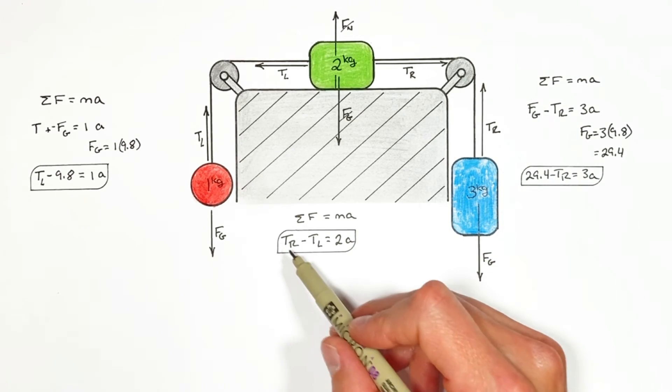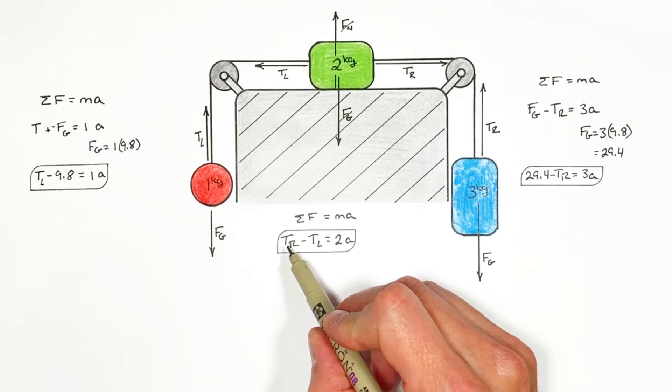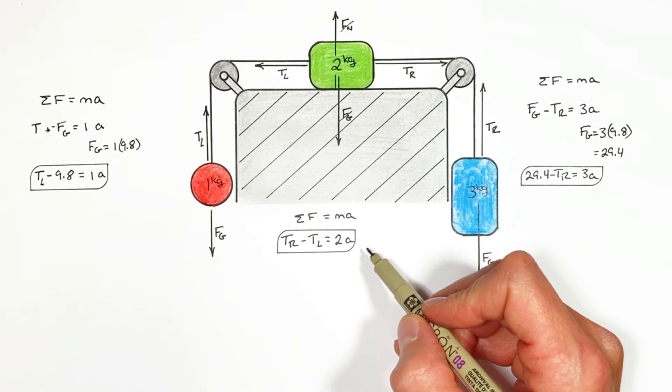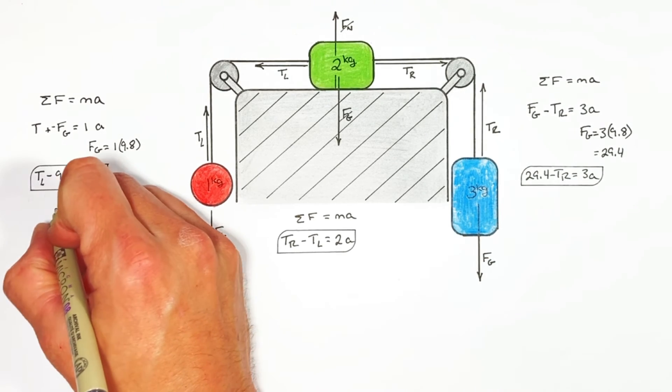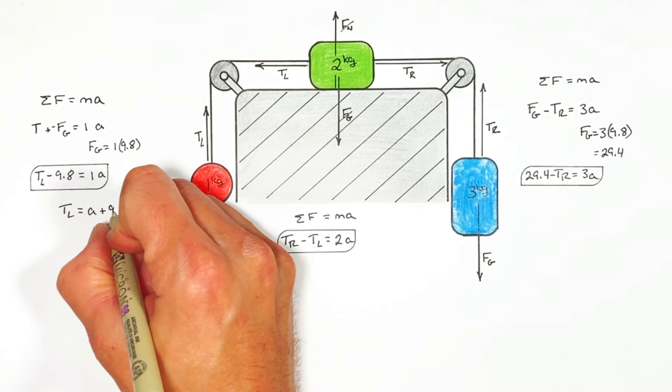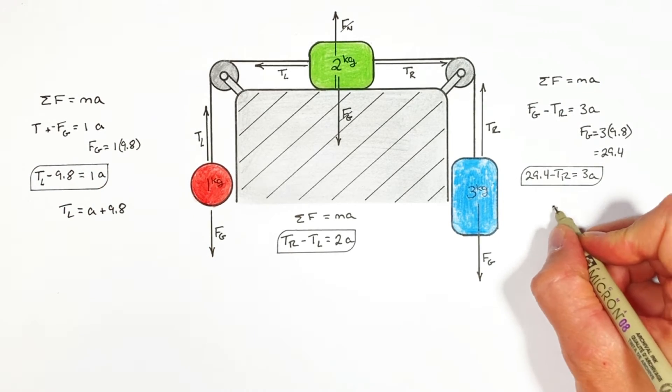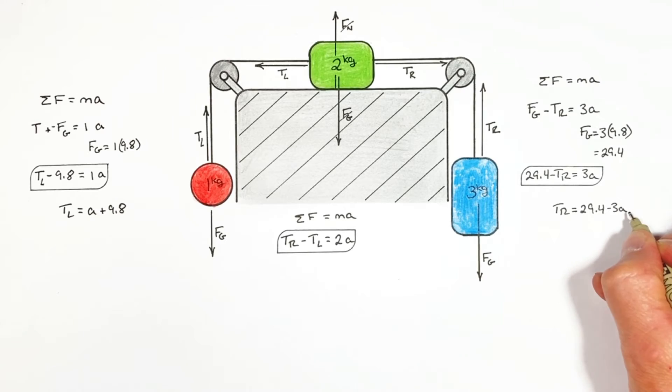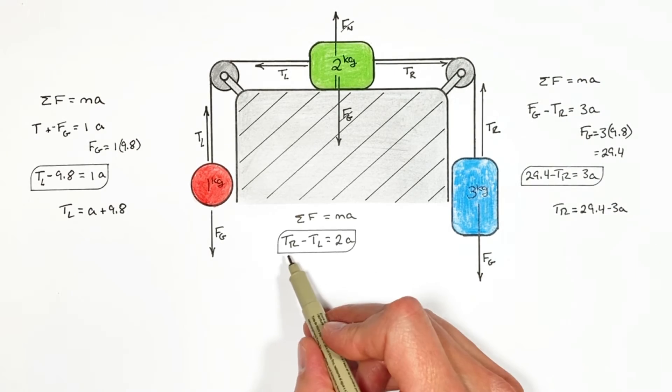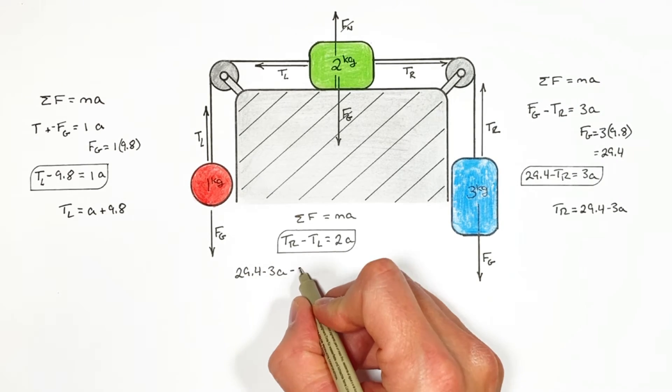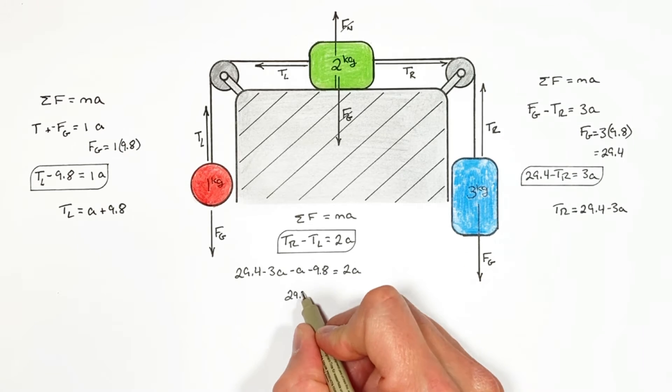Now the nice part of the math here is that this central equation includes all three of our unknowns. So if we rearrange this equation on the left for TL. And the equation on the right for TR. And then substitute each of those formulas into our central equation. We can solve for A.